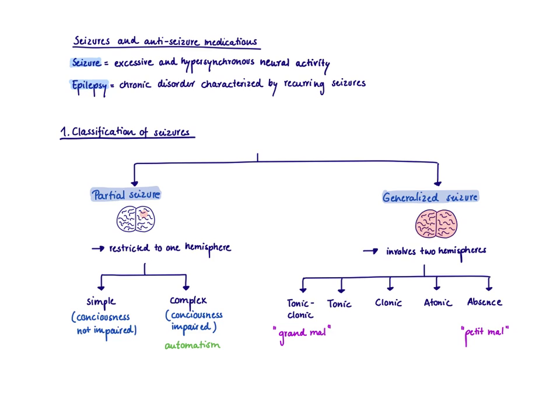There can be a lot of different reasons for having a seizure. There could be a brain tumor, meningitis, hypoglycemia, or hyponatremia. So obviously, if somebody is presenting with a seizure, you need to do a very thorough examination to figure out what could be the reason. If there is no obvious reason and this seizure is recurring, then this patient might have epilepsy.